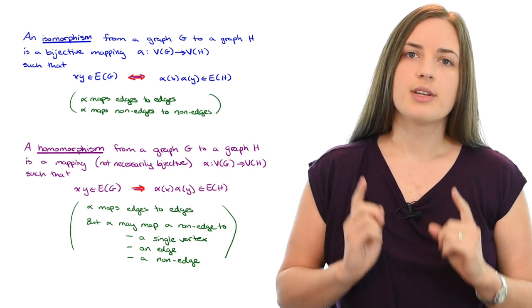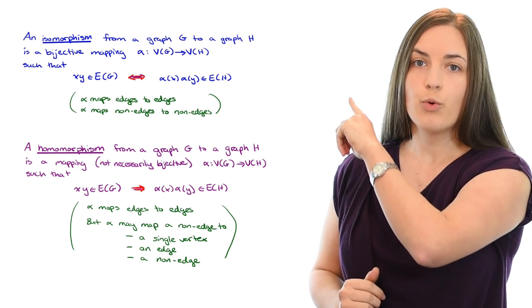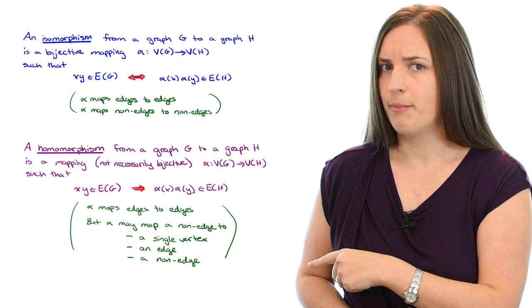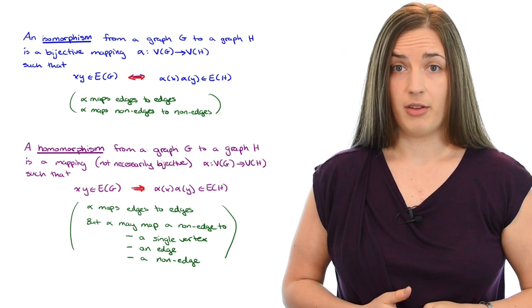So just at a glance, you can see that if you had a mapping which was an isomorphism, then it would be a homomorphism. But in general, a homomorphism may not be an isomorphism. Now let's work through a couple of examples.